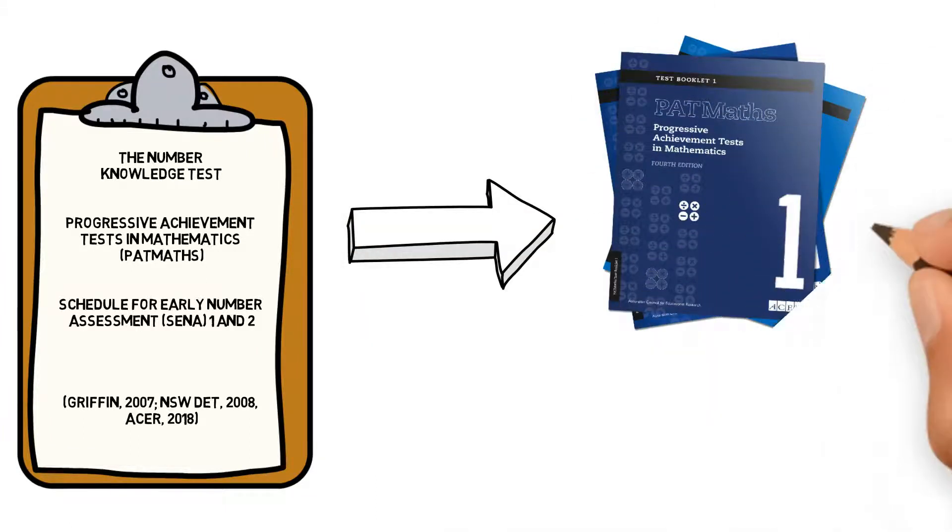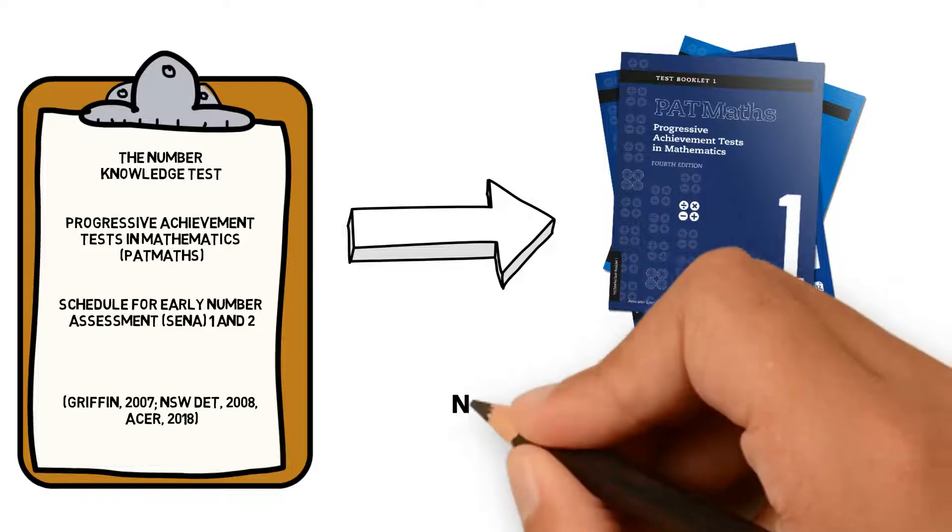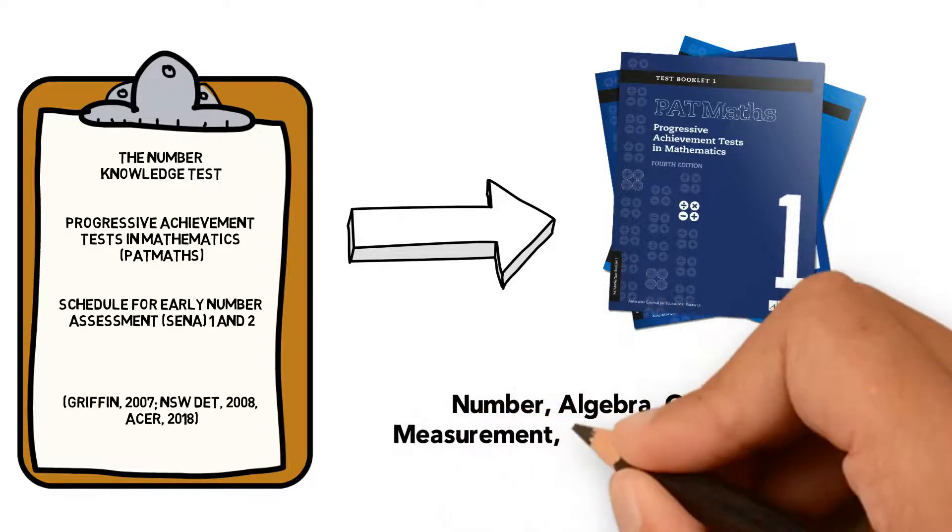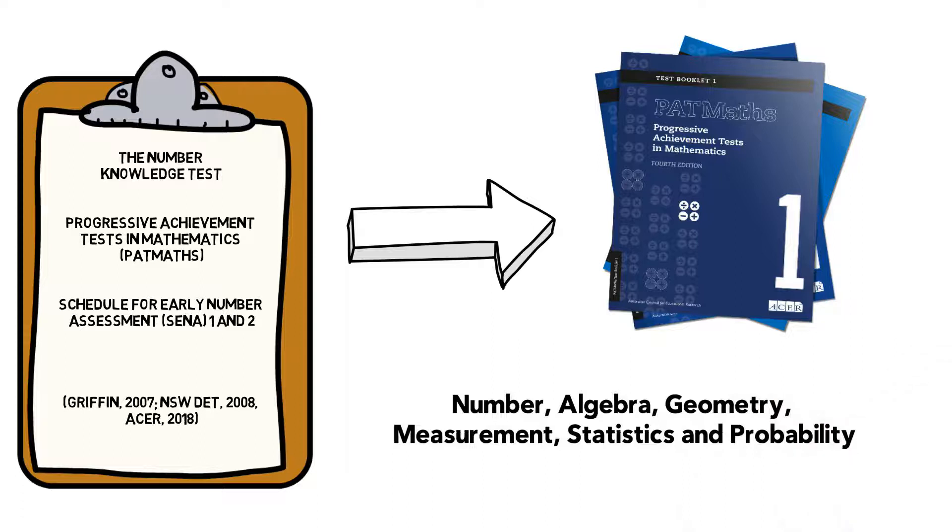PATMAPS is useful as it tests students' skills and understanding in the six strands of the Australian mathematics curriculum: number, algebra, geometry, measurement, statistics, and probability.